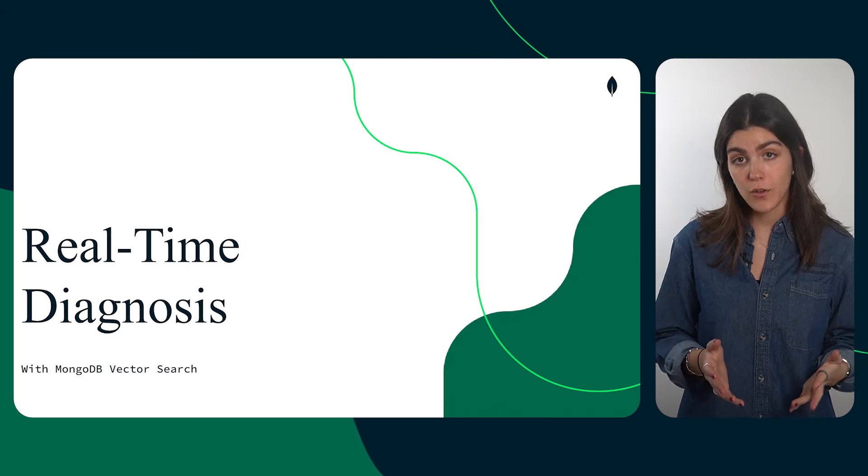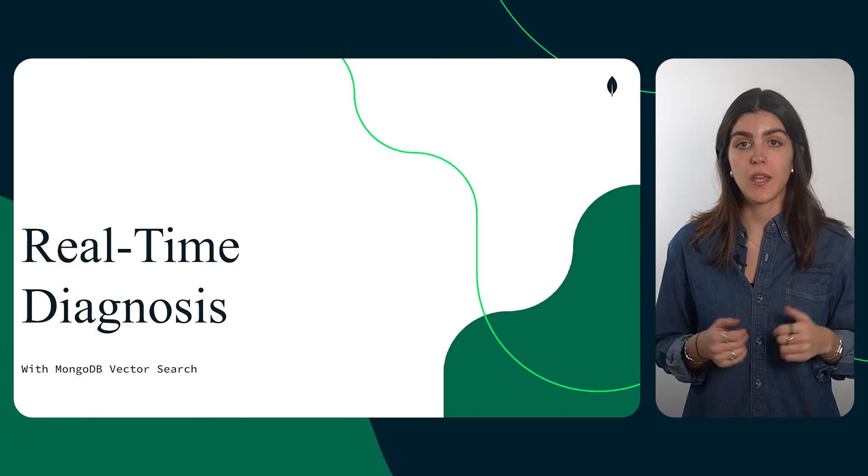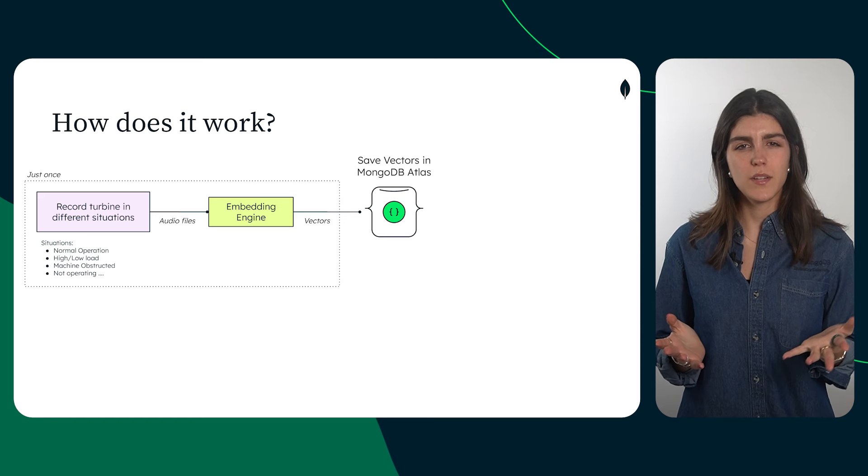Let's have a look at how we can overcome these challenges with MongoDB Atlas and Vector Search through a quick and fun demo. In our demo, we will use a handheld fan as our makeshift wind turbine. Wind turbines make different sounds that vary depending on their current operational state. By continuously monitoring the turbine's audio, our system can predict the maintenance needs and reduce the risk of unexpected breakdowns. But how does it work?